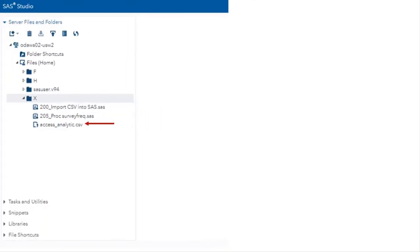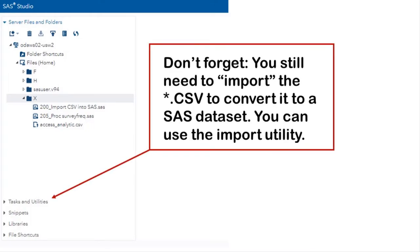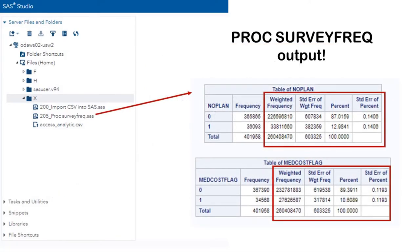I crossed my fingers, and it worked — I was able to upload it. But remember, you still have to convert it to a SAS dataset. This is SAS, so of course it's confusing. In order to use the dataset in analysis, you still need to use PROC IMPORT or the IMPORT utility to convert it into SAS format in the SAS ODA environment. But once it's uploaded in there, it works. You can see my PROC IMPORT code on GitHub. And I was able to get my PROC SURVEYFREQ output to come out. See those weighted frequencies and percents? That's what you need SAS for.